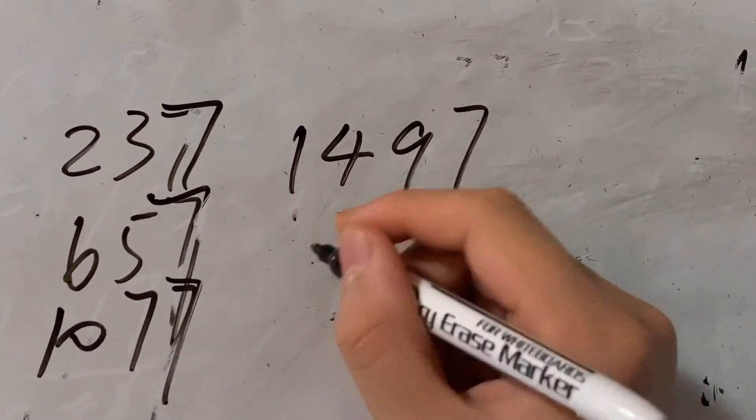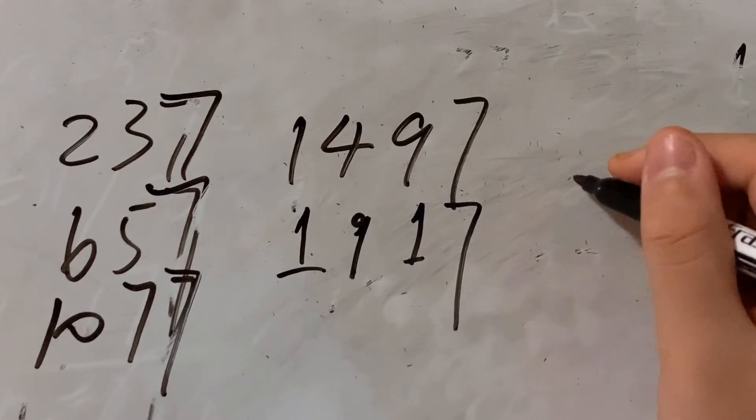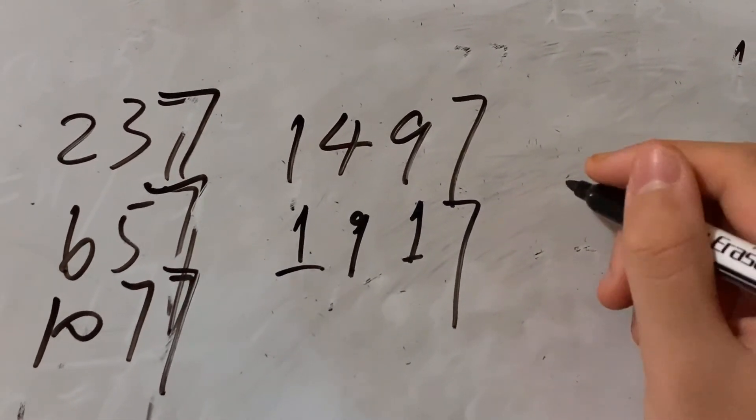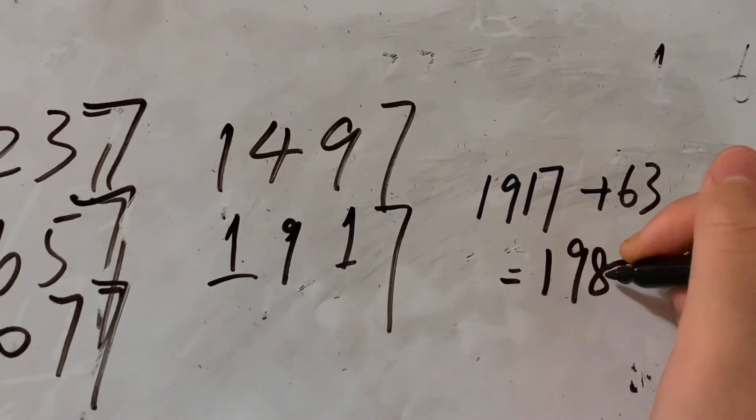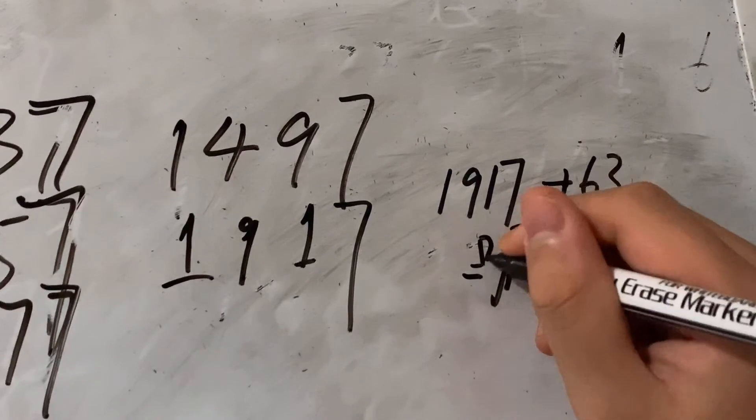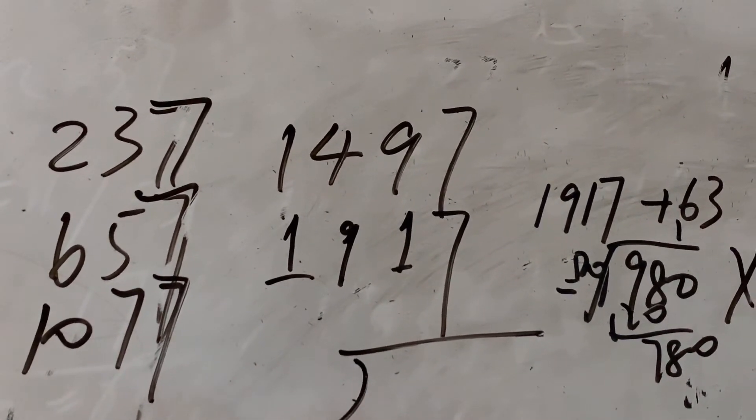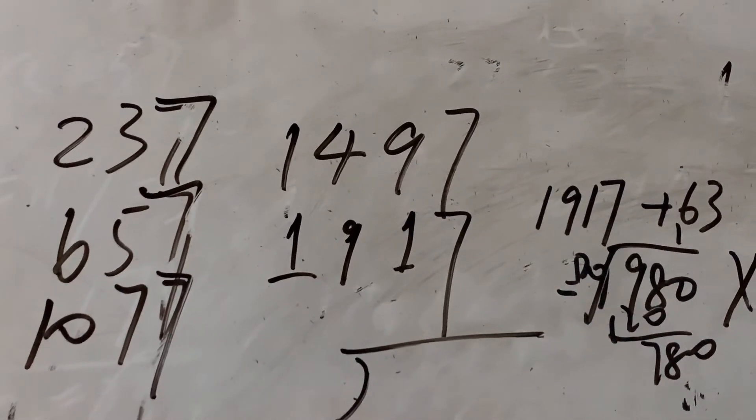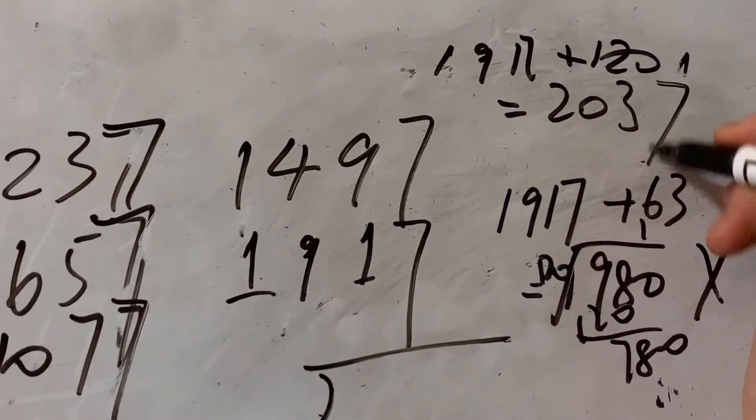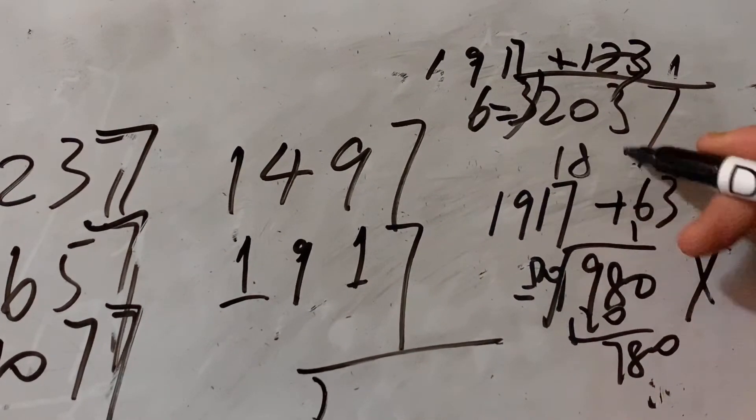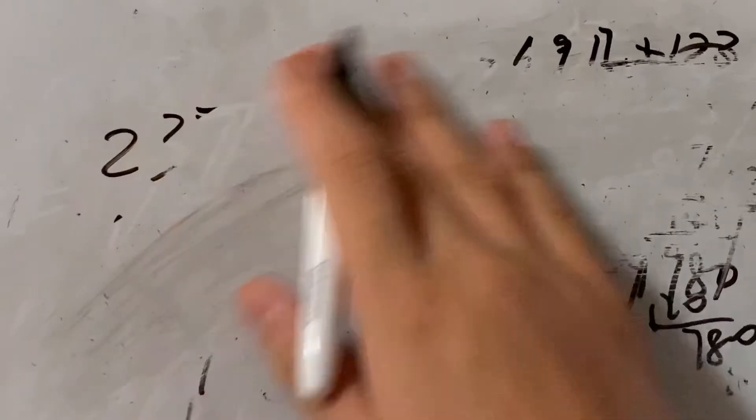So the final one, the ultimate one we are going to try is 1917, whether it is going to work or not. So we try to add in 63. Okay, this is not divisible by 120. So we try the second type, which is 1917 plus 120. 2037. We try to divide it by 63. So which means that the second requirement also works out.